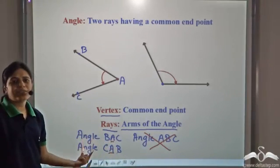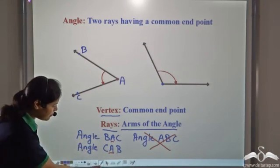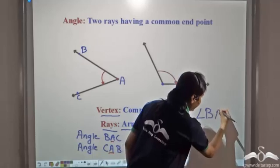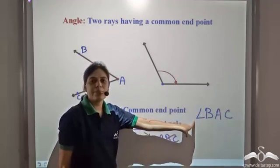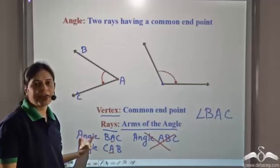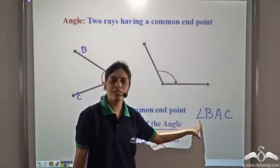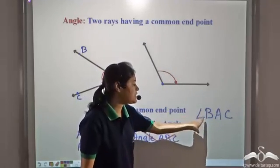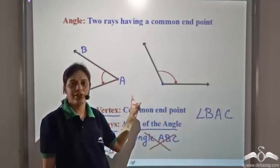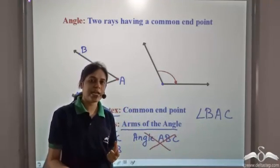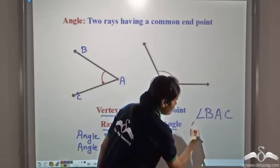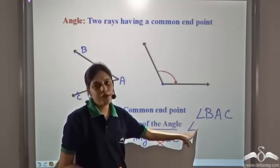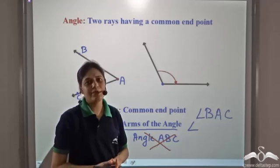Instead of writing 'angle' again and again, we use a symbol — that is the angle symbol — to write angle BAC. Note that this symbol has nothing to do with the shape of the angle. The angle may be an obtuse angle, a right angle, or a reflex angle. This symbol is always written in this manner and will never change, whatever may be the shape of the angle.